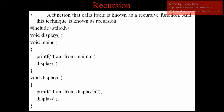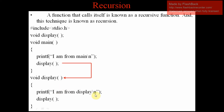We will see an example. In this example, I have declared one function called display. Then I am having the main function. In the main, I am just printing one line called 'I am from main.' Then I am calling the display function. So what is happening here? The main will call the display function, so execution is going to the display function. In the display function, it will display 'I am from display.' Then it will call the same function — display. It is calling display again.